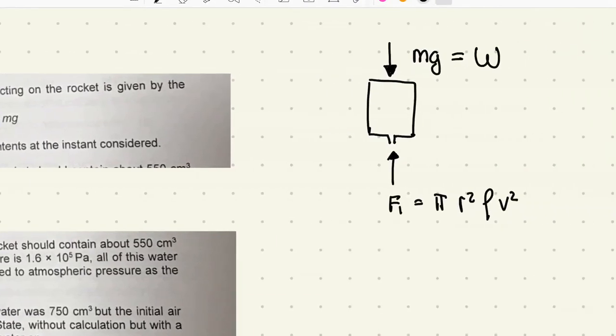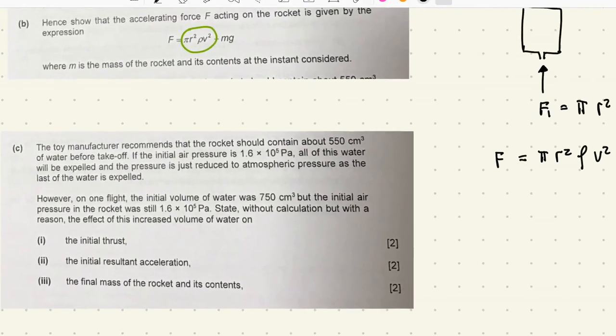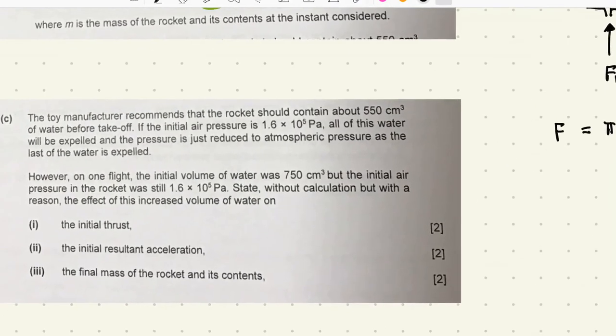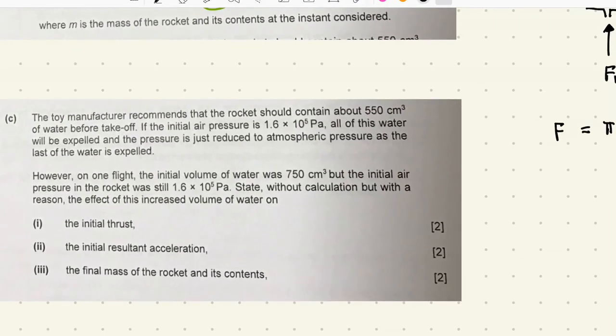The m is changing, so it's a variable. Then the resultant force is just u minus w, pi r squared rho v squared minus mg. Very simple.